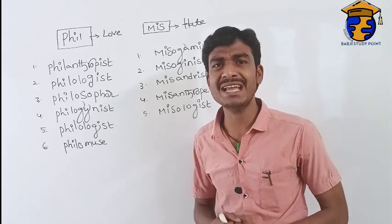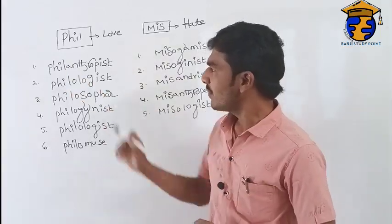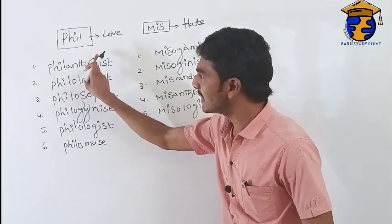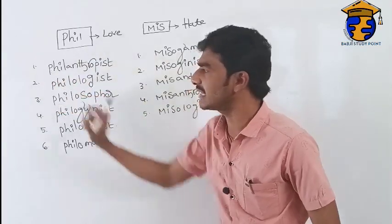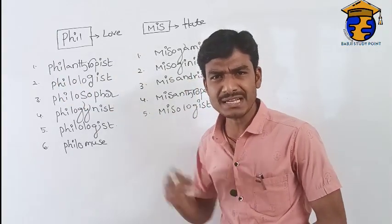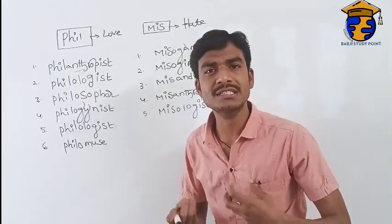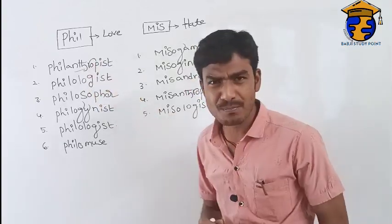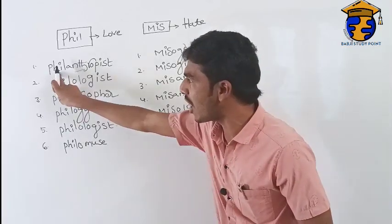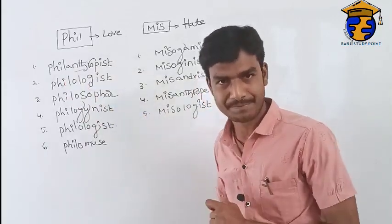Let us discuss them one by one. The first word is 'philanthropist.' In this word, 'phil' is our prefix, which means love. 'Anthro' means human. So love of mankind is called a philanthropist.